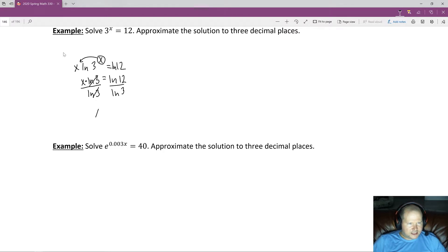These natural log of 3 cancels out with natural log of 3, leaving me natural log of 12 over natural log of 3. And that's about 2.2618595 and on and on.